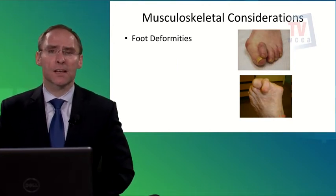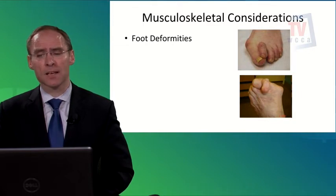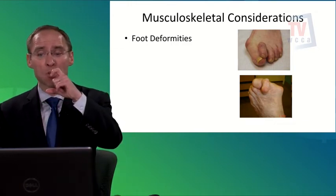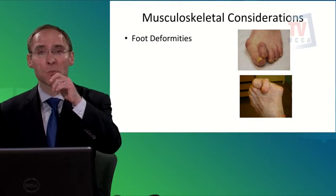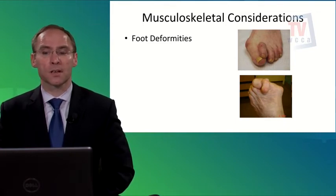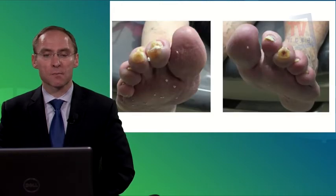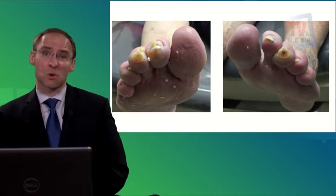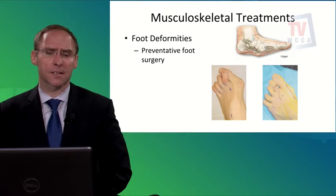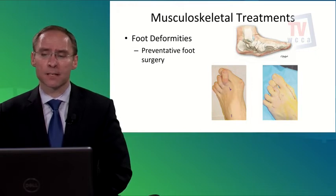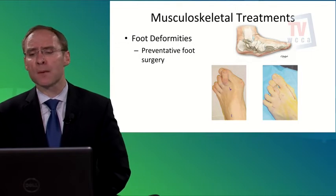Looking at musculoskeletal considerations, there are various foot deformities such as hammer toes and bunions that make it difficult to find proper shoes. Wearing improper shoes can cause blisters and ulcers on the top of the toe. These deformities can be corrected surgically, provided the patient has sufficient circulation for healing. The picture on top shows an example of a Charcot foot.